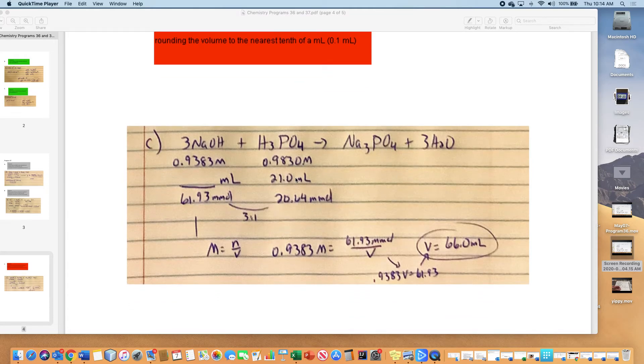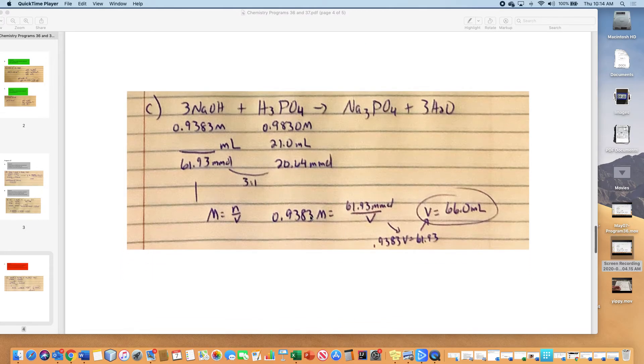If you take this molarity times volume, you get 20.64 millimoles. This time, it's three times as much. Three over X equals one over this. You cross-multiply. It's a three to one ratio. 61.93 millimoles. So if you take the molarity equals 61.93 over V, cross-multiply, you get 66 milliliters.